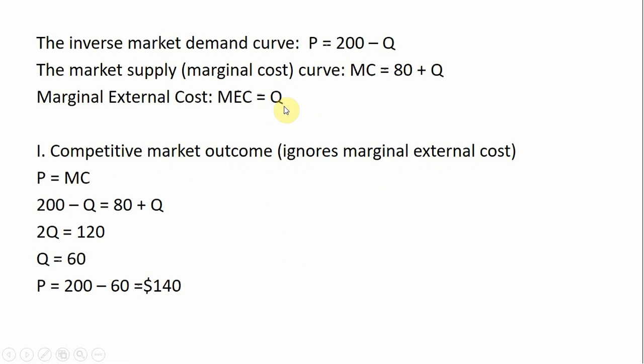The first thing we're going to do is look at the competitive market outcome, the unregulated market outcome. That'll be our benchmark case. So in the competitive market, price will equal marginal cost or where demand intersects supply. Setting the price equation equal to the supply equation, we solve and get Q equals 60. Plugging that 60 back into the demand equation, the equilibrium price is 140.